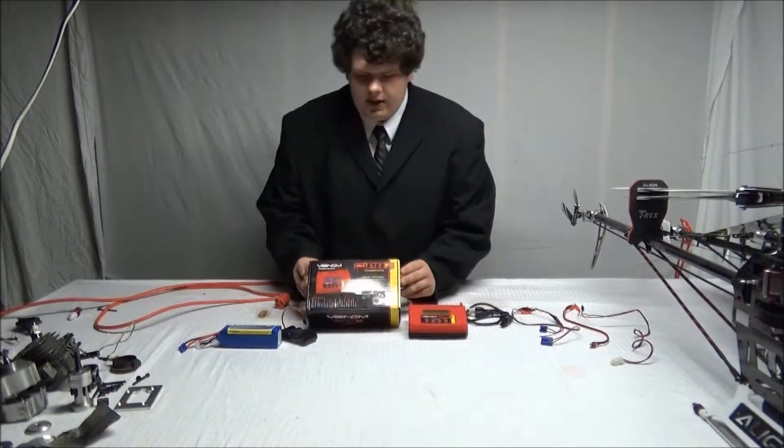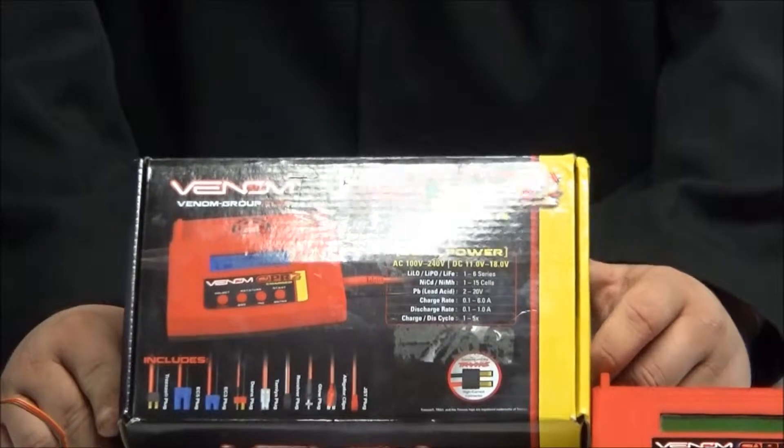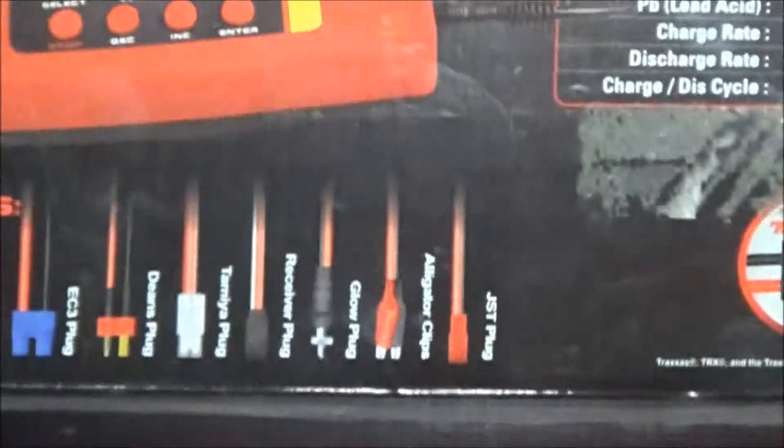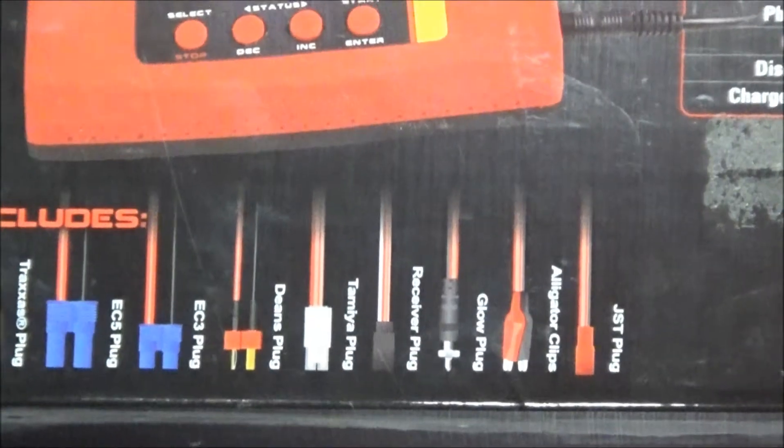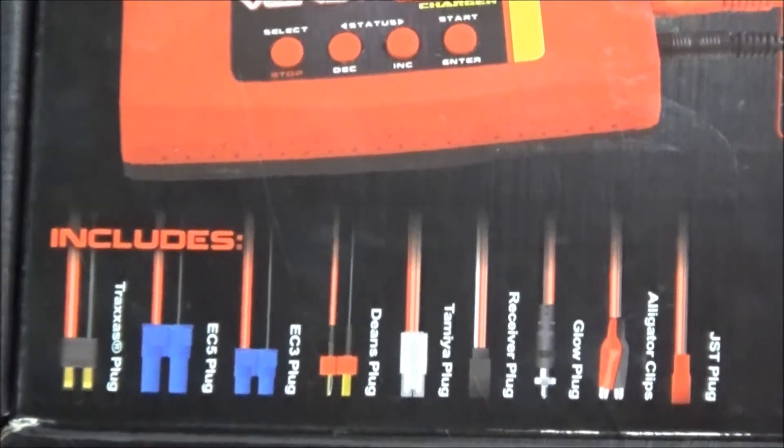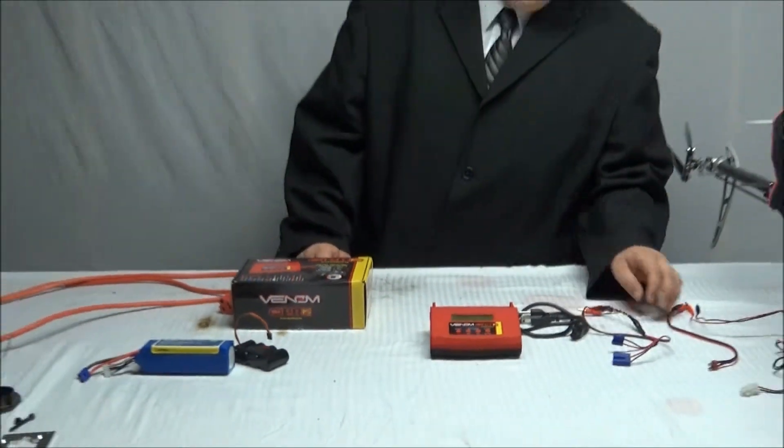So we're going to look at the box right here of all the capabilities. First we're going to talk about some of the adapters it comes with right out of the box. As you can see here, it'll be easier to show from the box than with all these tangled mess of wires. But just for the camera's sake, we'll go ahead and show you some of the things that come with it.